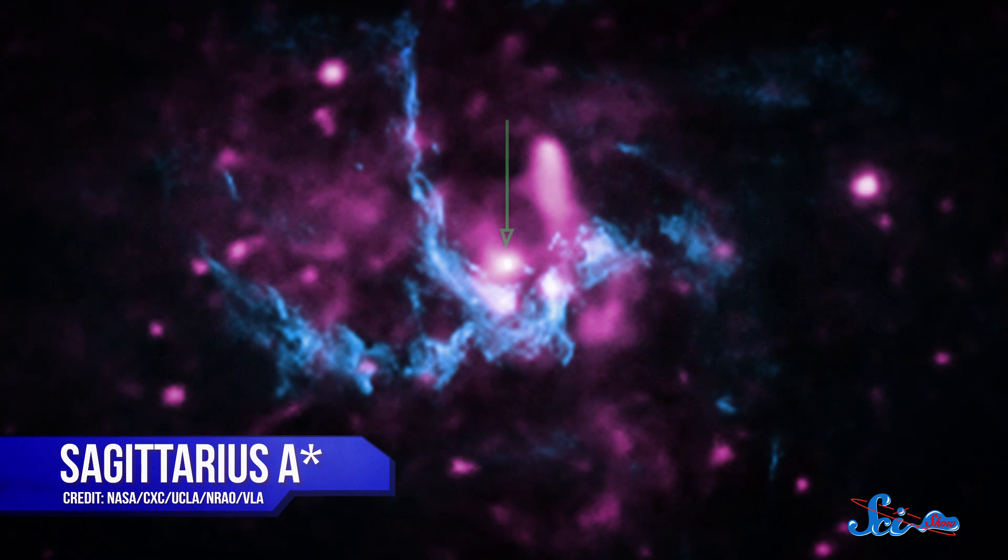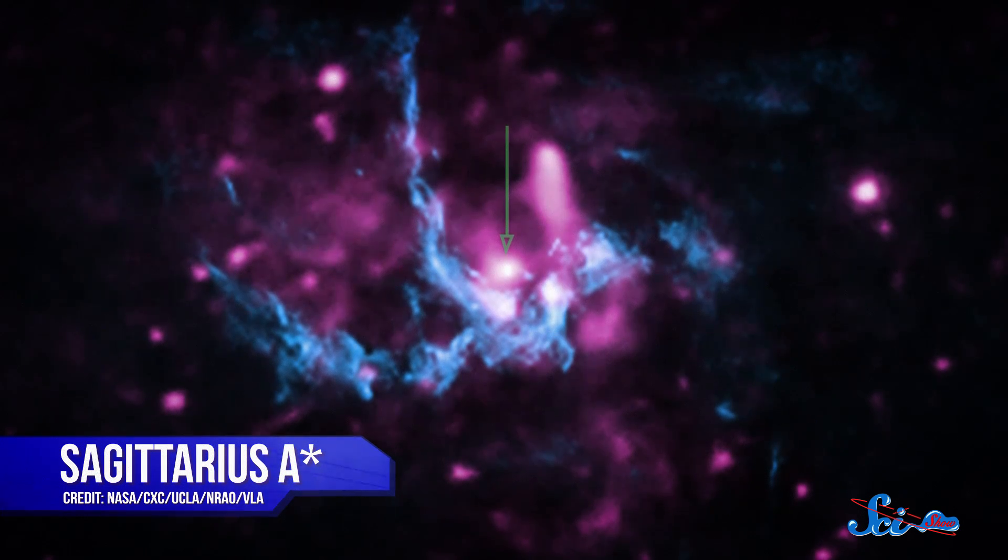And while that might sound a little bit terrifying to you, the first thing you should know about our resident black hole, which is named Sagittarius A star, is that it's not terribly big for its kind.